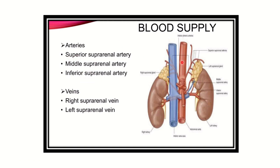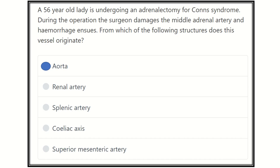The adrenal gland receives its blood supply through the superior, middle, and inferior suprarenal arteries. On the right side, the right suprarenal vein drains directly into the inferior vena cava, while on the left side, the left suprarenal vein drains into the renal vein.